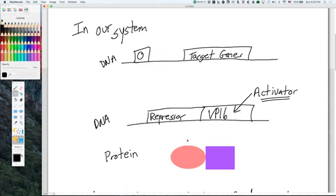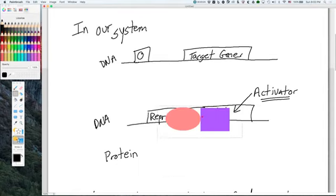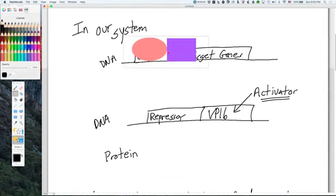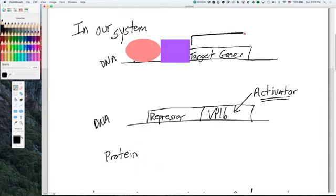When this fusion protein here, so if we take this fusion protein that's part repressor, part VP16, when this thing binds to the operator, the DNA sequence, then the target genes are on. And in fact, you would get a ton of transcription. You get lots and lots of RNA.